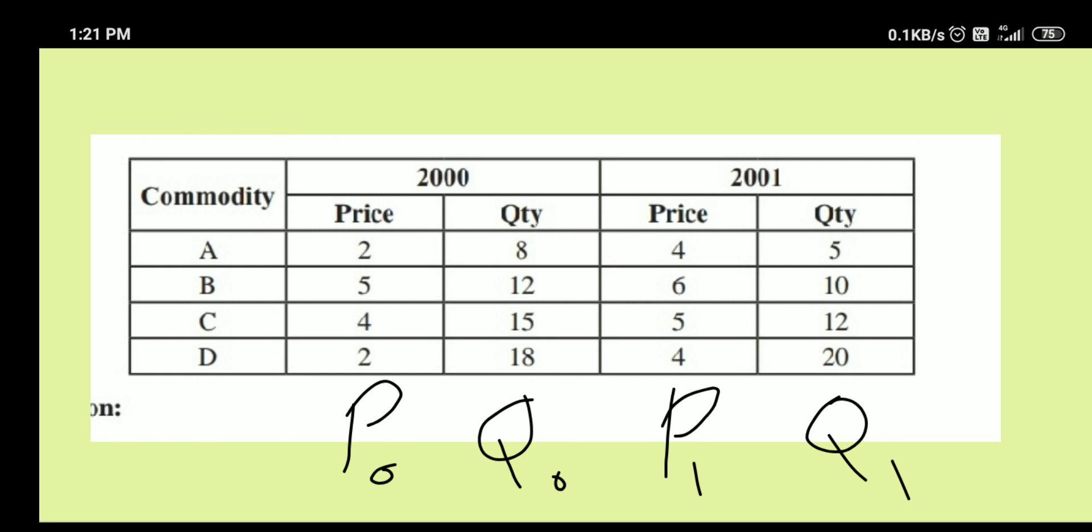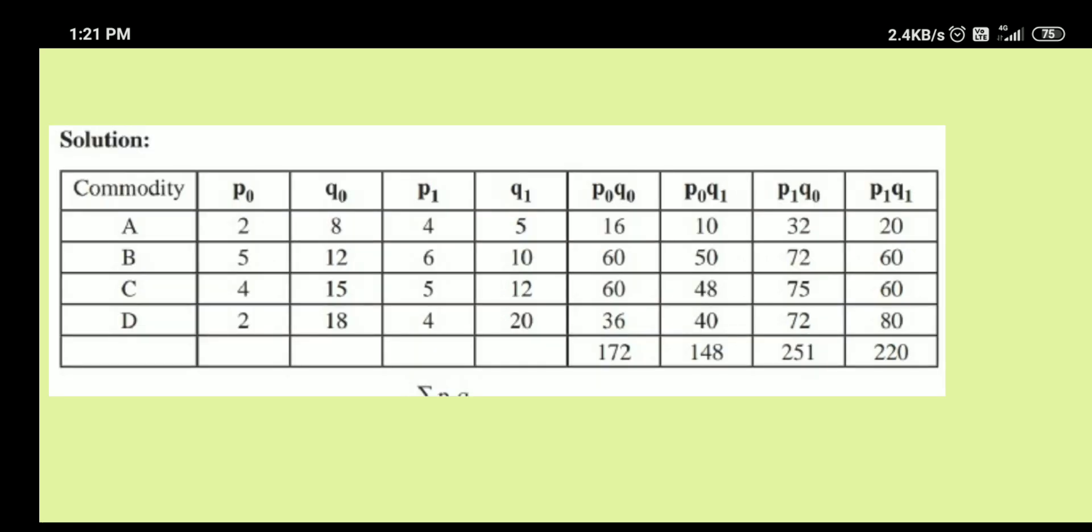So we have all the four details available here: P1, P0, Q1 and Q0. Proceed with the answer. See, we have prepared a table here. The first column is commodity A, B, C, D and the next four columns are P0, Q0, P1 and Q1.